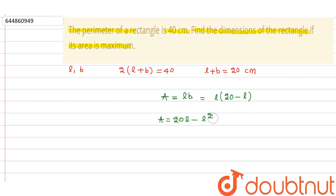Now it is said that the area of the rectangle is maximum. It means the first derivative of area must be 0. That means dA/dl = 0, and that is equal to 20 - 2l.